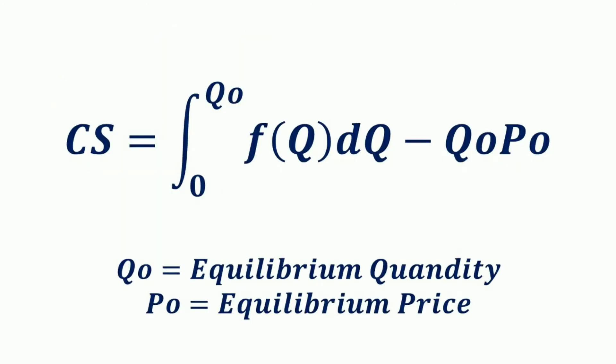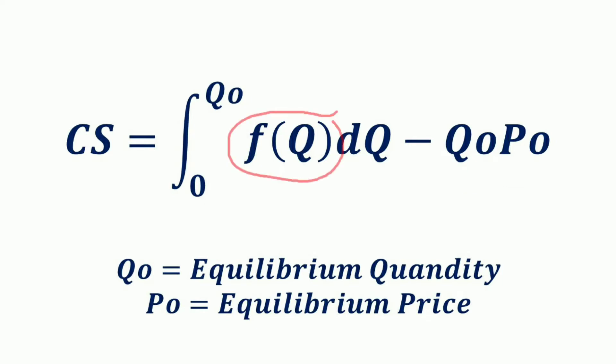If the demand function is given, represented by different prices that consumers are willing to pay for different quantities of goods, and with the given equilibrium price and quantity, consumer surplus can be mathematically calculated by the integral from 0 to Q₀ of F(Q) dQ minus Q₀ times P₀, where F(Q) is the demand function and Q₀ and P₀ are the equilibrium quantity and equilibrium price respectively.